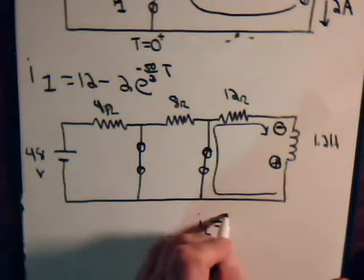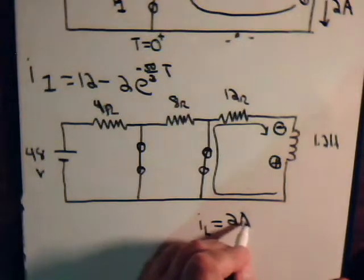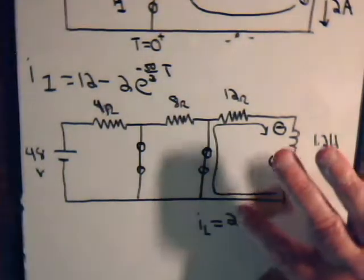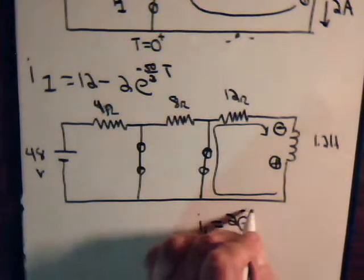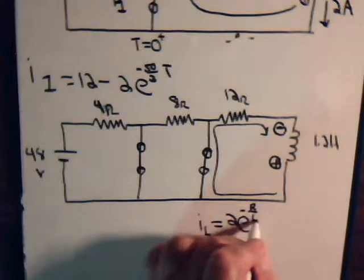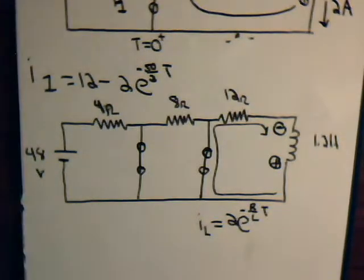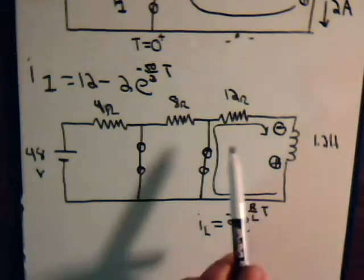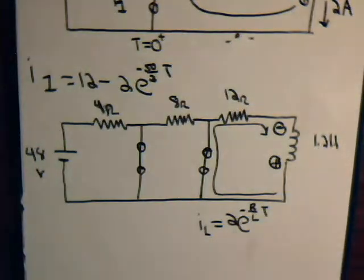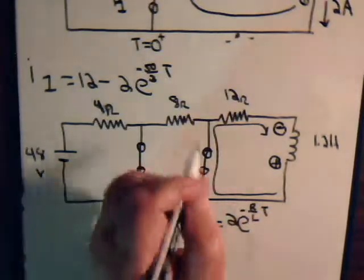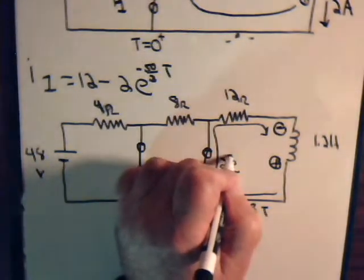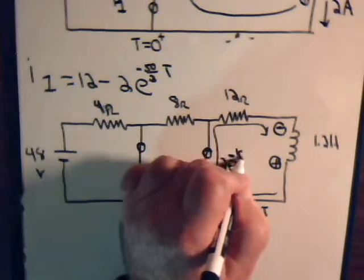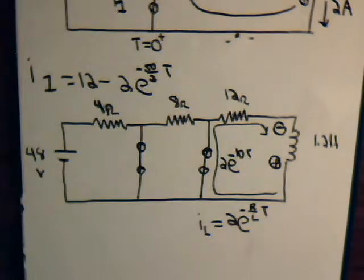Again, it starts off with a value of 2 amps, that doesn't change. Then we have e to the minus R over L multiplied by the time. R is 12 ohms, this is 1.2, so 12 divided by 1.2 is 10. So the decay current is 2 times e to the minus 10 times T.